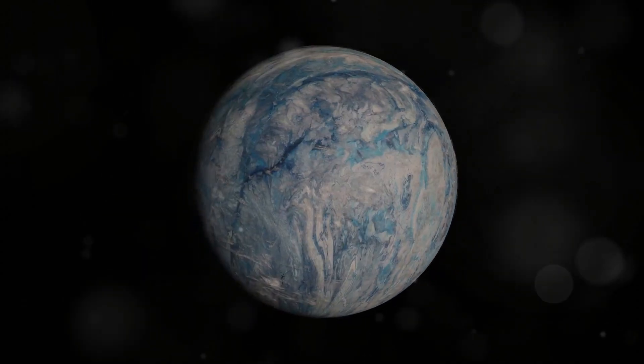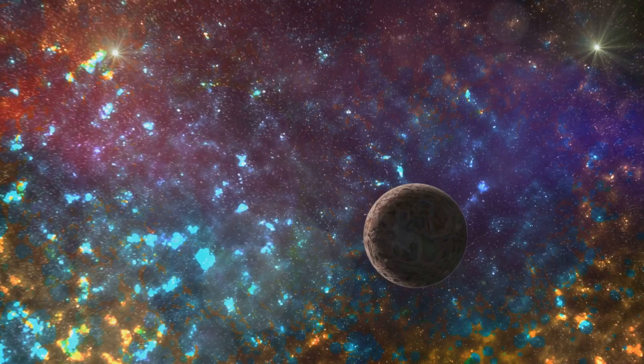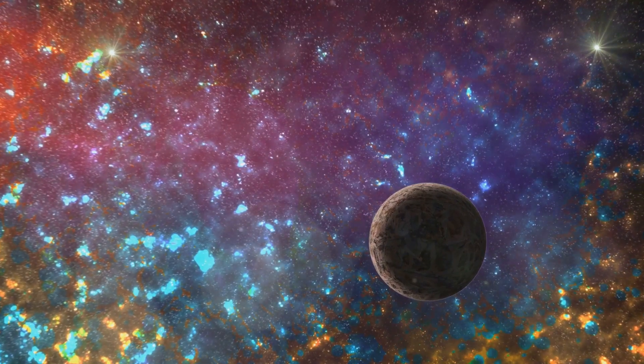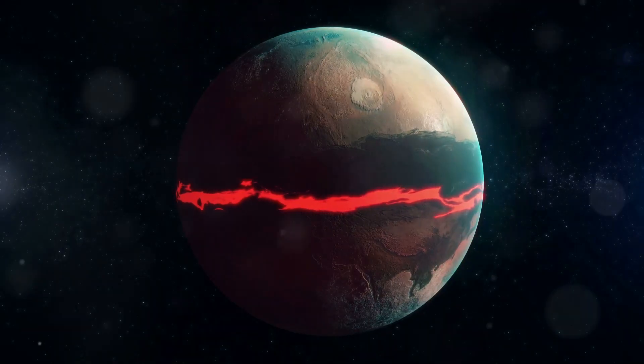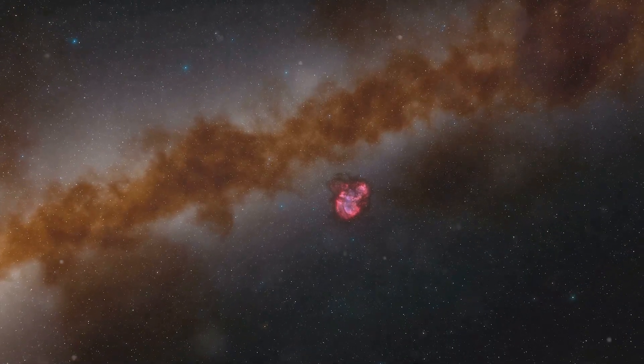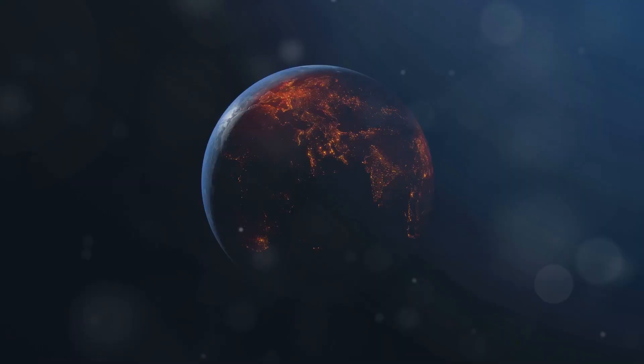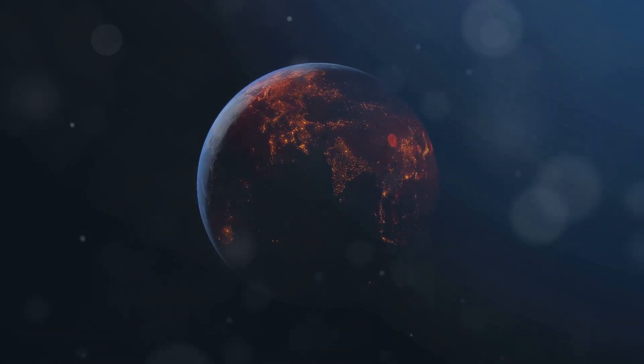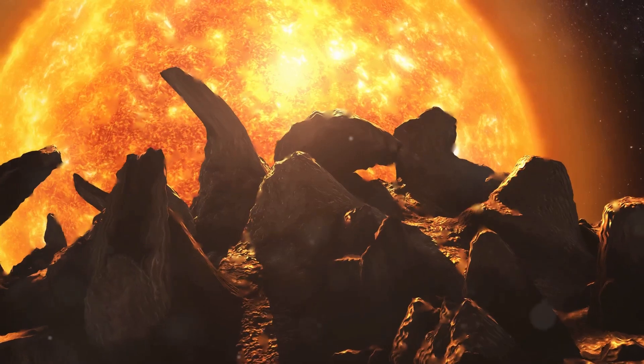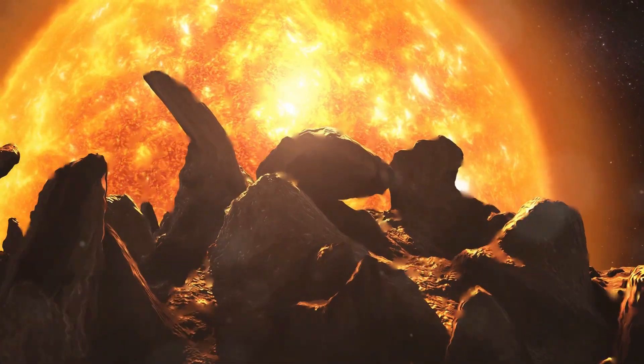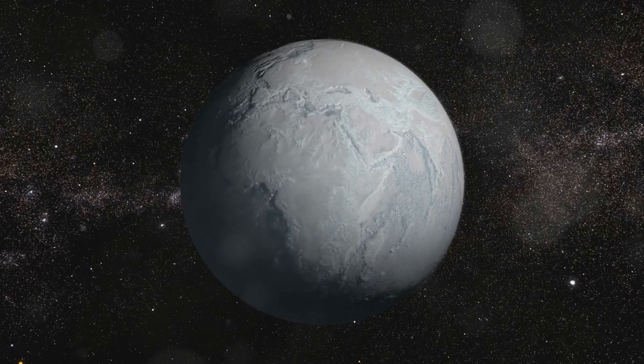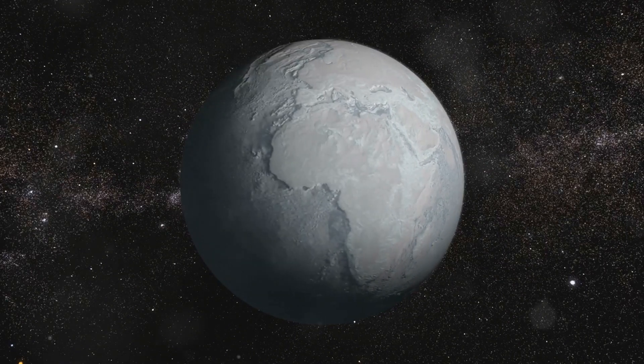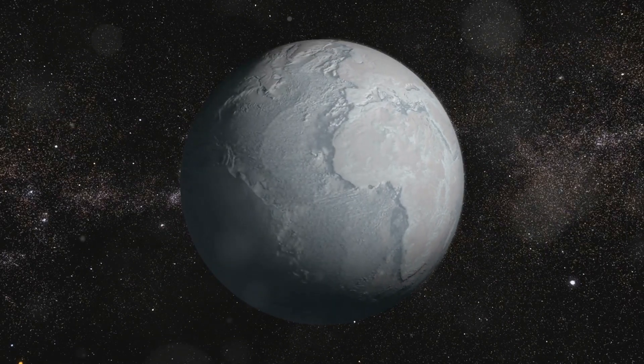Our next stop is Gliese 436 b, a Neptune-sized planet located 33 light-years away in the constellation Leo. This planet is a paradox. A cosmic riddle wrapped in a mystery inside an enigma. Gliese 436 b is a burning ice planet. The planet is close to its star so its surface temperature is an unimaginable 822 degrees Fahrenheit. Yet the planet's gravity is so strong that it compresses the water vapor in its atmosphere into solid ice.